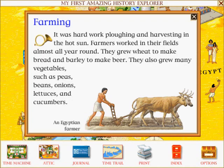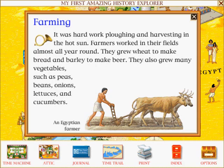Farming: It was hard work ploughing and harvesting in the hot sun. Farmers worked in their fields almost all year round. They grew wheat to make bread and barley to make beer. They also grew many vegetables, such as peas, beans, onions, lettuces and cucumbers.